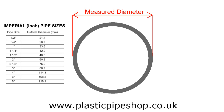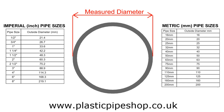The metric pipe system is much simpler, as the pipe size is a direct reflection of the outside diameter. As you can see from the table on the right, a 20 millimetre pipe actually measures 20 millimetres on the outside diameter, and a 25 millimetre pipe actually measures 25 millimetres on the outside diameter, and so on.